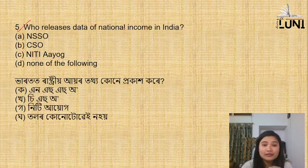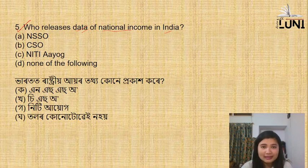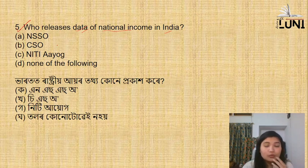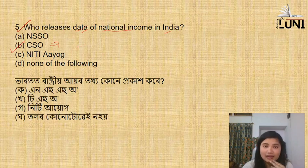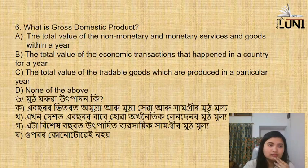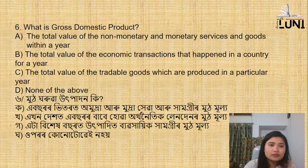Next question: who releases data of national income in India? National income refers to the goods and services produced. The options are NSSO, CSO, NITI, or none of these. The answer is CSO. CSO full form is Central Statistical Organization, also known as Central Statistical Office. So CSO releases national income data in India.